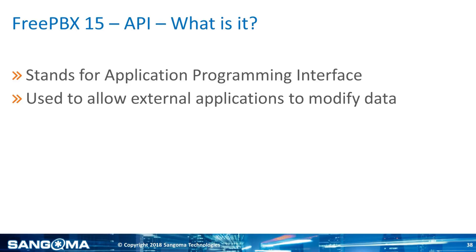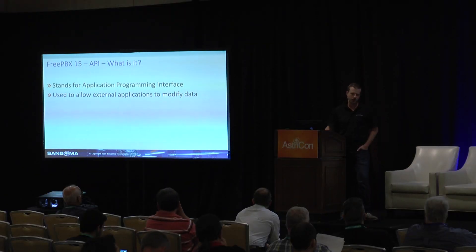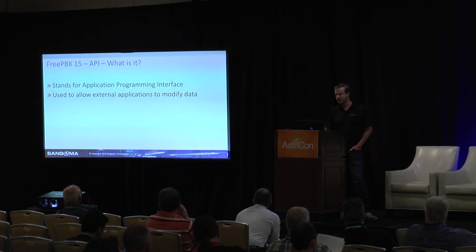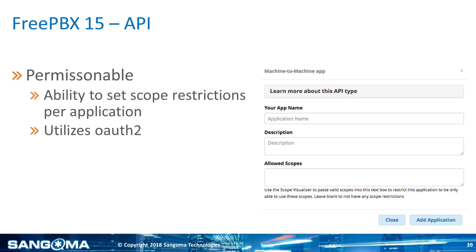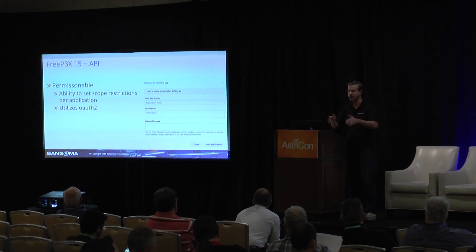FreePBX 15 also added an API. This allows you to modify and see data remotely. It uses OAuth2, which is an authentication method with different grant types — Facebook and Amazon use it, it's pretty standard. It's permissionable: per app, each module declares what's called a scope. So if you wanted to write an app that connects to FreePBX just to talk to the core module and add an extension, you can set the permissions that fine-grained.